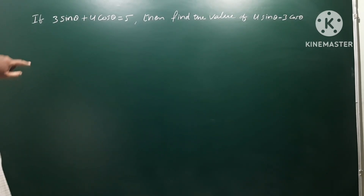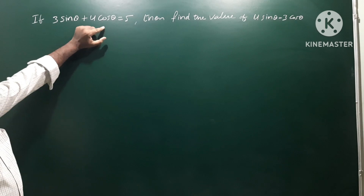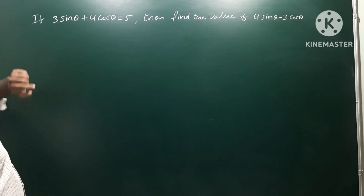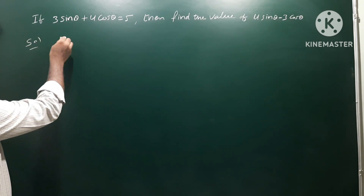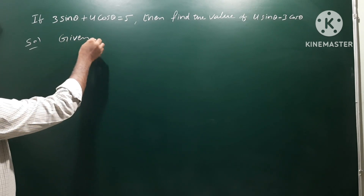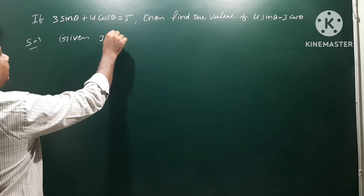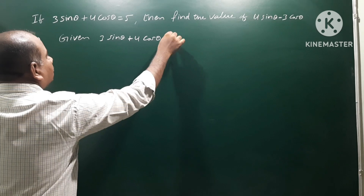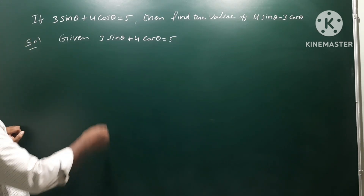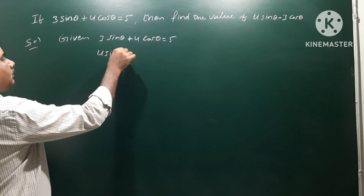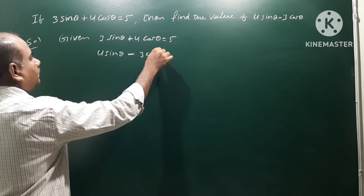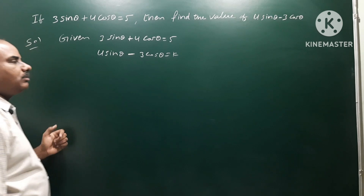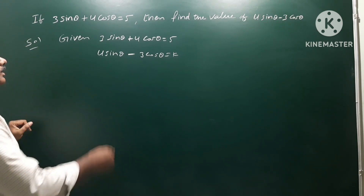The next problem: 3sinθ + 4cosθ = 5. Find the value of 4sinθ − 3cosθ. Solution: given 3sinθ + 4cosθ = 5. Let the value of 4sinθ − 3cosθ equal k, where k belongs to R.